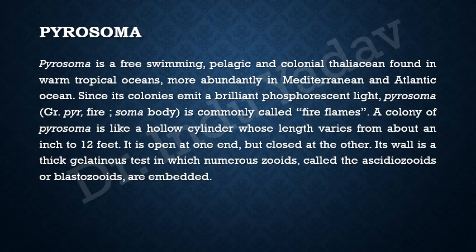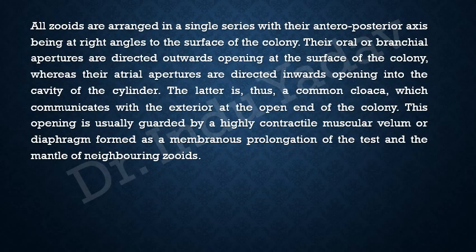The wall of the colony is a thick gelatinous substance in which numerous zooids, called acidozoids or blastozoids, are embedded. You should not get confused by these two terms — acidozoids and blastozoids both refer to the same individual, like one individual Pyrosoma, which together with all the other individuals forms a colony. All zooids are arranged in a single series with their anteroposterior axis at right angles to the surface of the colony.